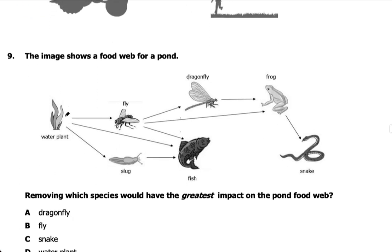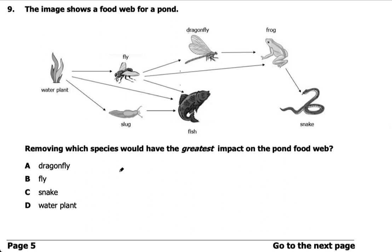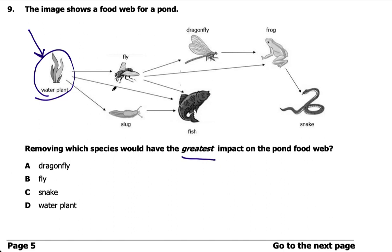Number nine shows a food web for a pond. Removing which species would have the greatest impact? All of these would have some impact, but think about where all the energy starts in this food web. It starts from the sun, but that's not an option. The next thing — the sun gives its energy to the water plant, and everything else comes from the water plant. So removing the water plant would have the greatest impact. Remember: if you remove the producer in a food web, it affects the entire food web the most.